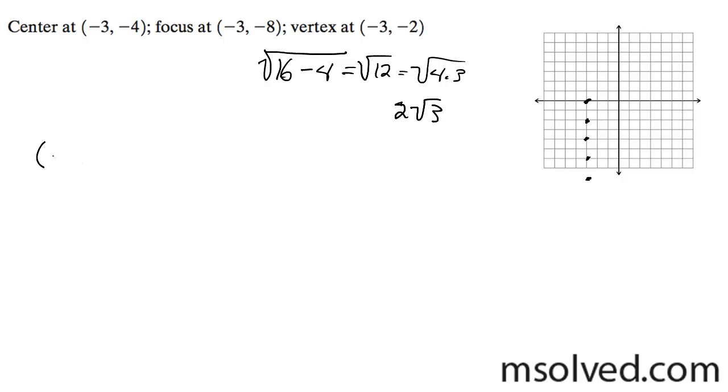So I'm going to write the equation. I keep mixing some of these things up. It's y plus four squared, because the center's down four, over four, and then x plus three squared over 12 equals one.